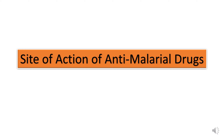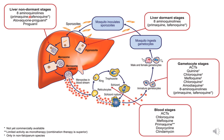Let's see the site of action of anti-malarial drugs — at which stage they show their effects. The 8-aminoquinoline derivatives will affect the malarial parasite when it is present in the liver cell. Primaquine, tafenoquine, and atovaquone affect the parasite in the liver cell stage. In the liver dormant stage, 8-aminoquinoline derivatives such as primaquine and tafenoquine are most effective against the hypnozoite stage of the malaria parasite in the liver.